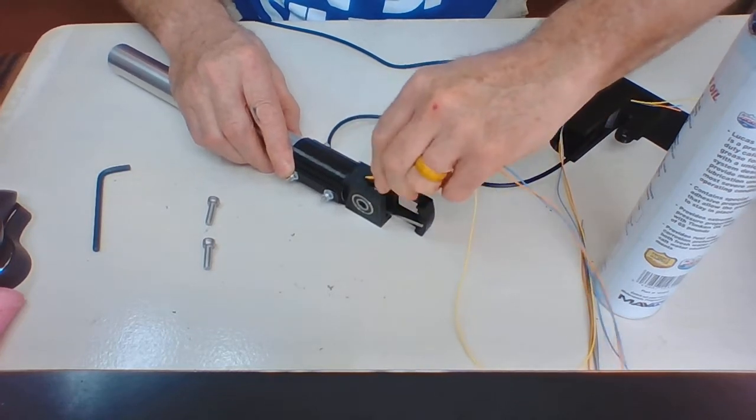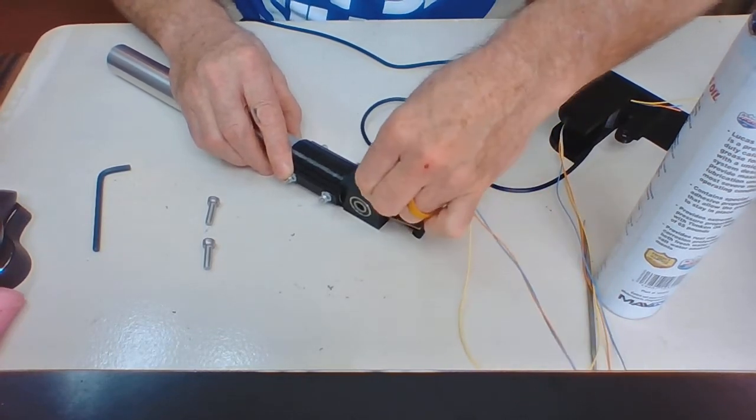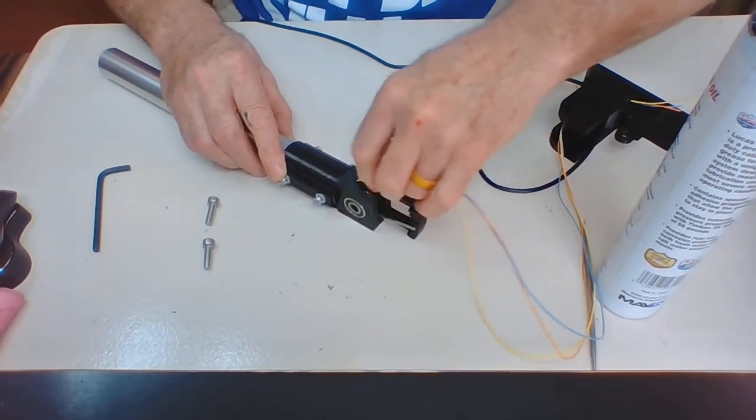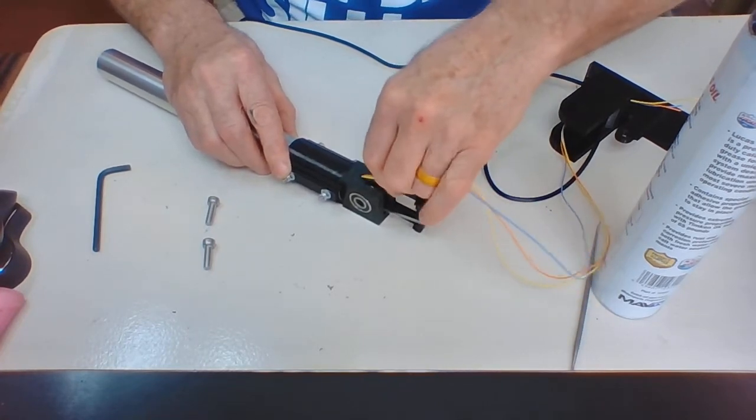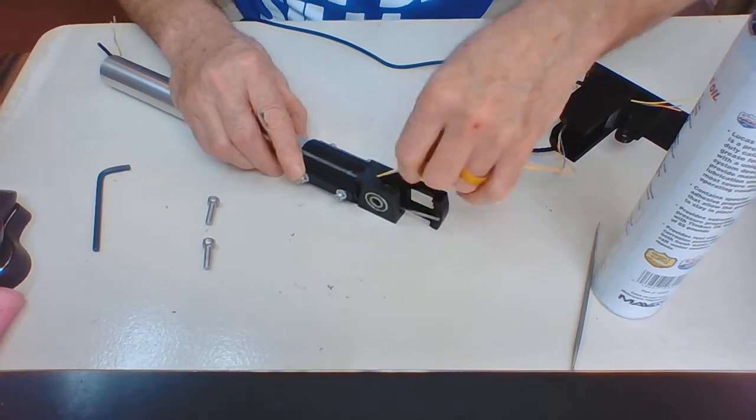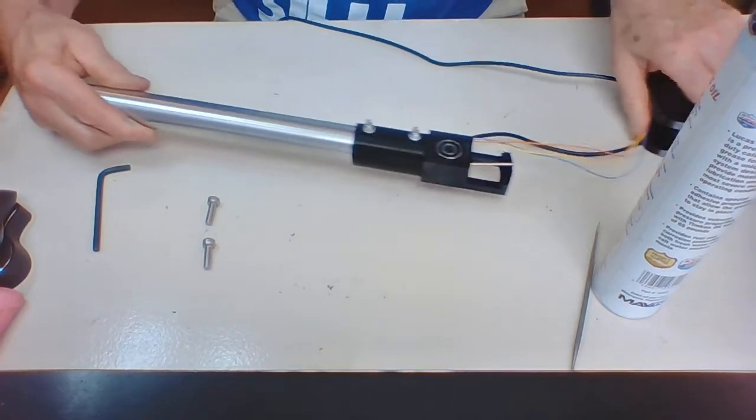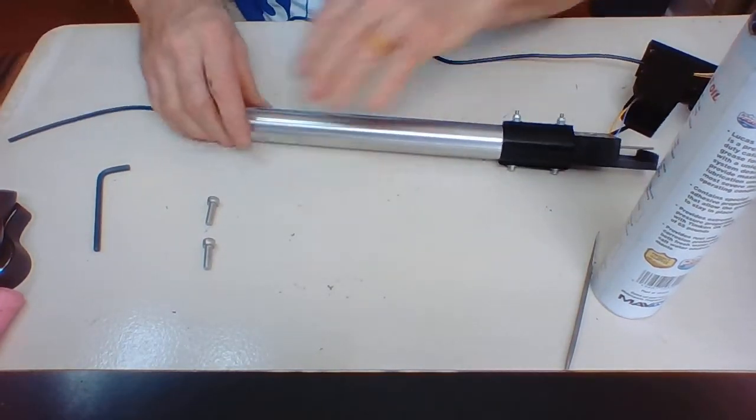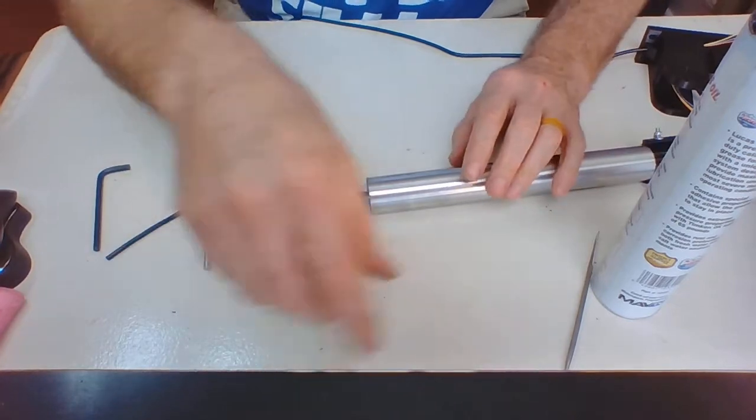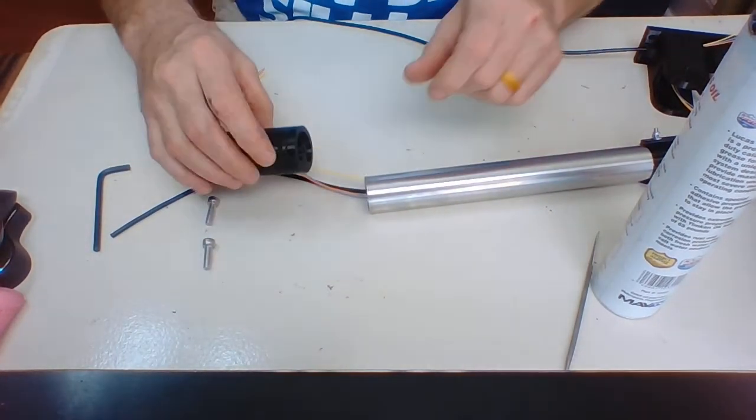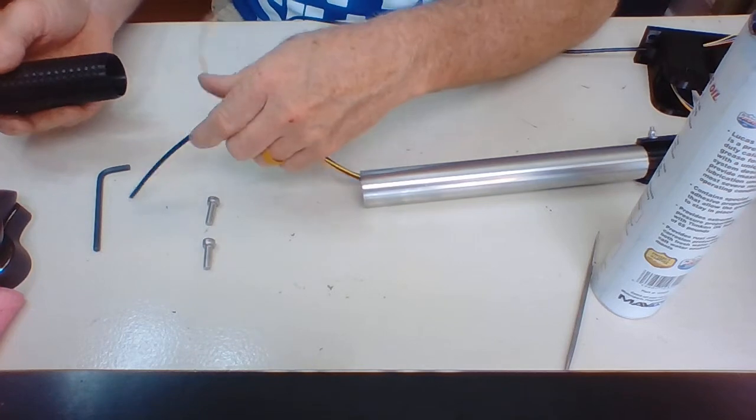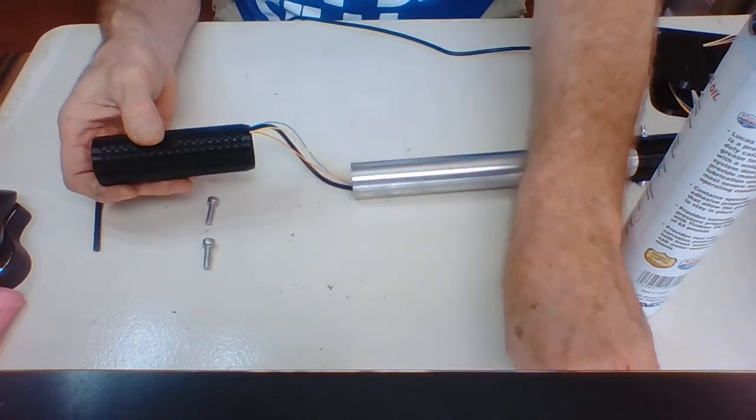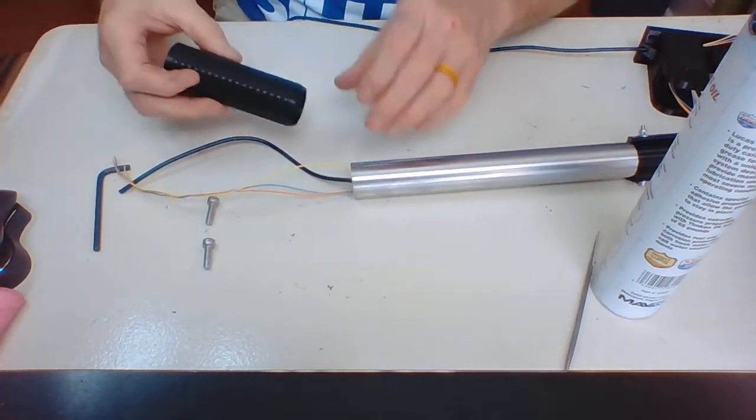And then we're going to feed those all the way up and more and more until they come out the end. And then we're going to pull this through a pretty decent distance. Because when we put this together and do some soldering, I've got to have room for this to go through the throttle handle and to be able to solder up to one of the other pieces.